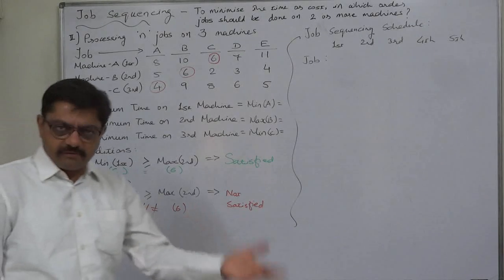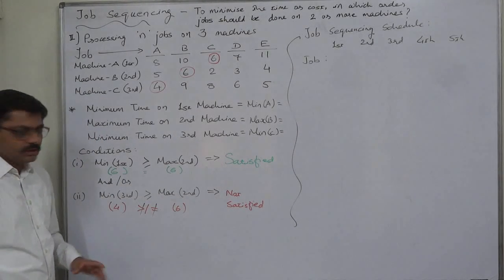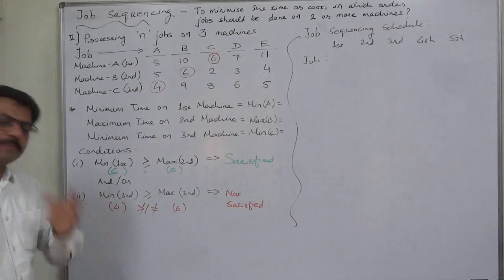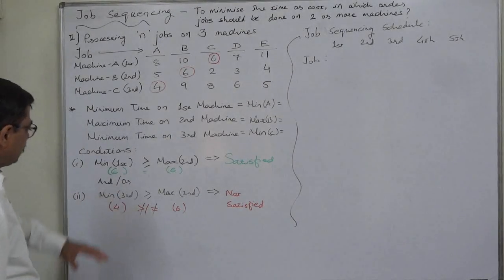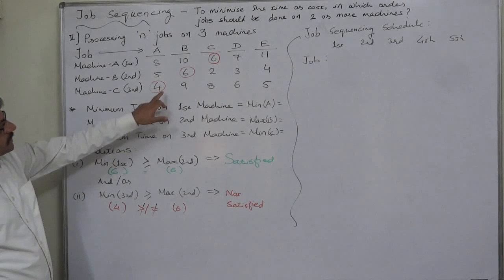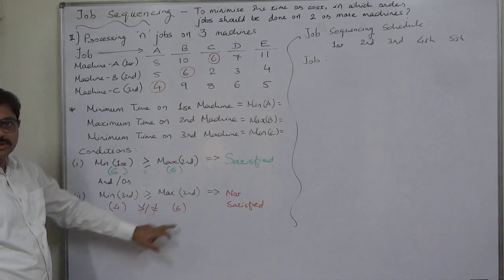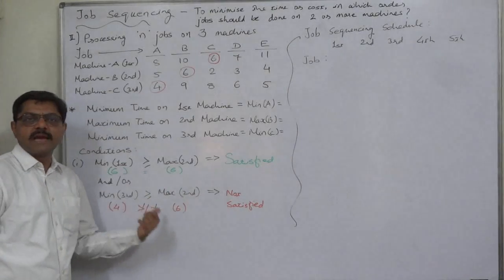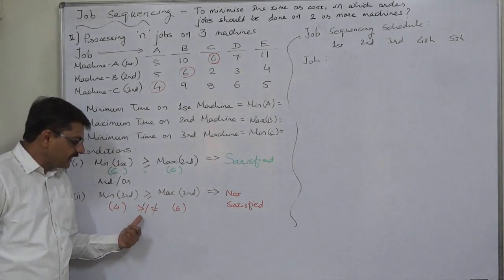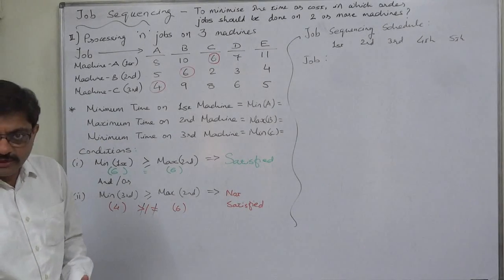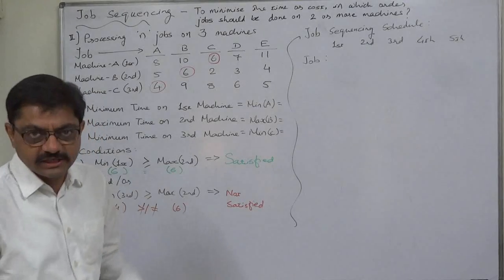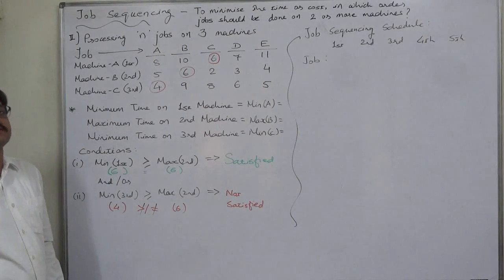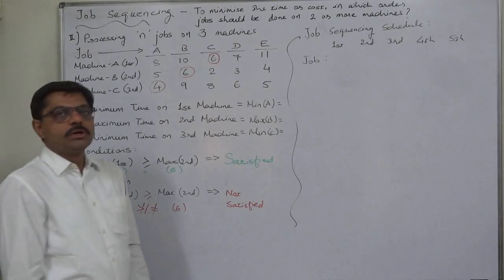Now let us check whether the second condition is also satisfied. The first condition being satisfied is already sufficient to convert the data into a two-machine case, but let us verify. Minimum time on Machine 3 is 4, and maximum time on Machine 2 is 6. The condition requires minimum time on Machine 3 to be greater than or equal to maximum time on Machine 2. Since 4 is neither greater than nor equal to 6, this second condition is not satisfied. But since any one condition being satisfied is sufficient, we can proceed.